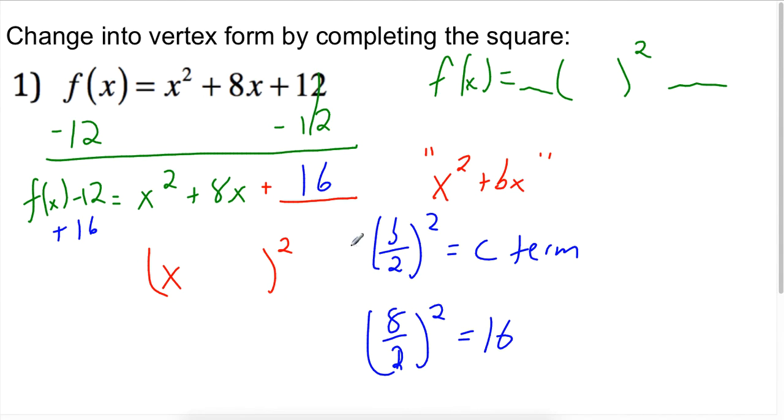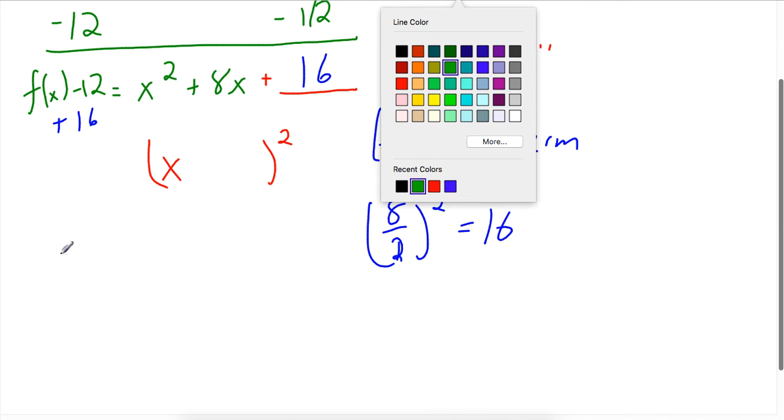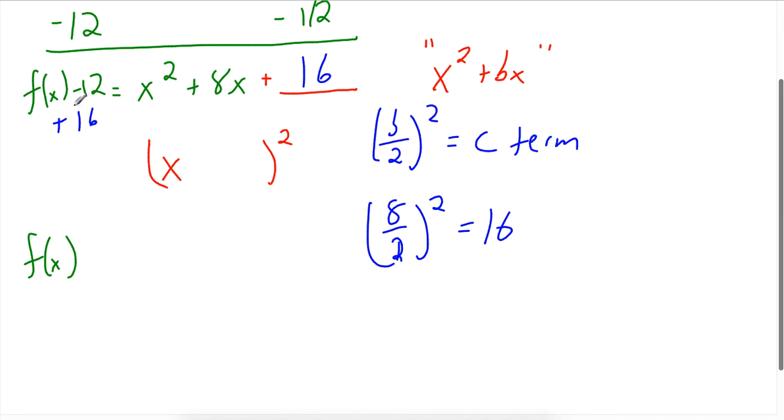All right. So now that I have that, let's see what I have here. I'm going to move down a little bit. What I have going so far is f(x) equals, and I have this minus 12 plus 16. Let's just consolidate that together and make that a minus 4. That equals x squared plus 8x plus 16.